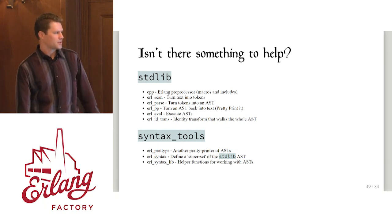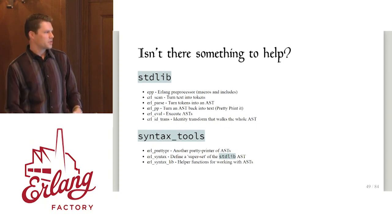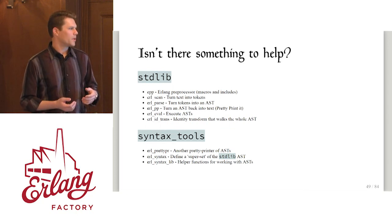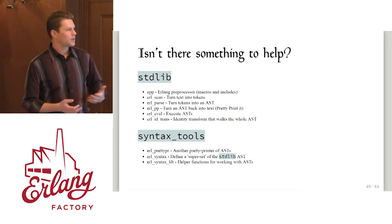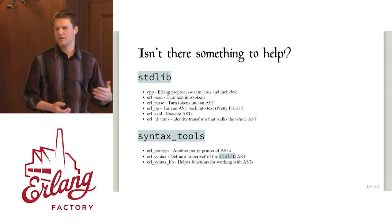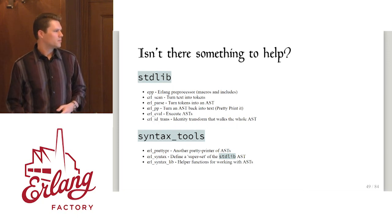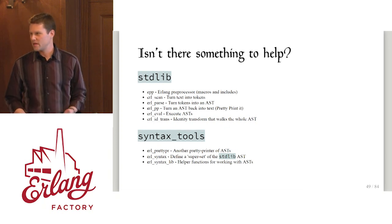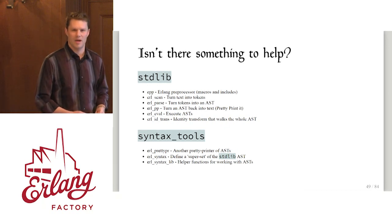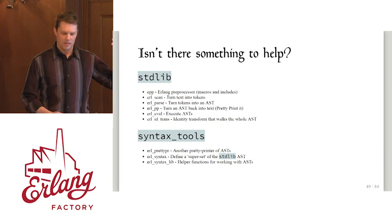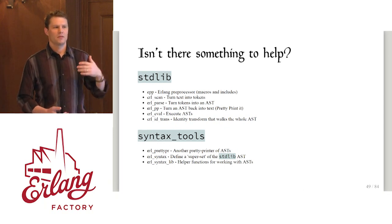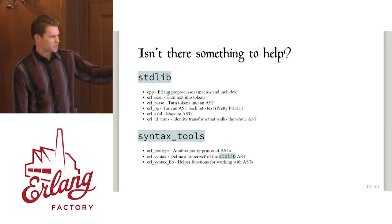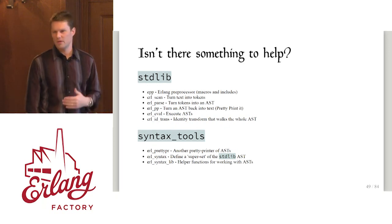That doesn't mean you're insulated from additions to the language. Maps in Erlang 17 were a completely new feature with new syntax tree forms to represent everything you can do with a map. If you were using the ID trans approach to write your transform — manually walking through the entire AST — and that AST changes, your code's going to break. Using something like erl_syntax_lib insulates you from some of those underlying changes. The common pattern is: find an AST node of interest, extract some context, create a new AST node with something changed, replace the original node, do this for all occurrences in the program, then give it back to the compiler.